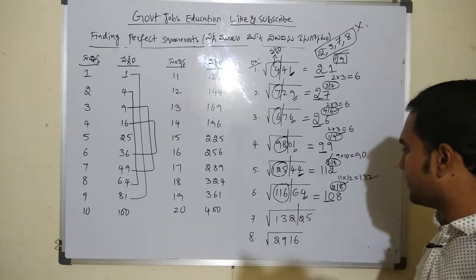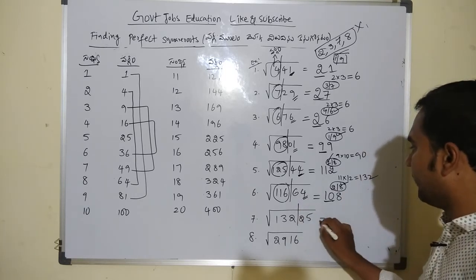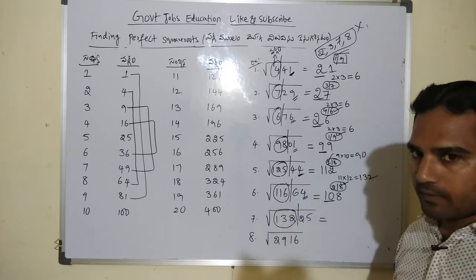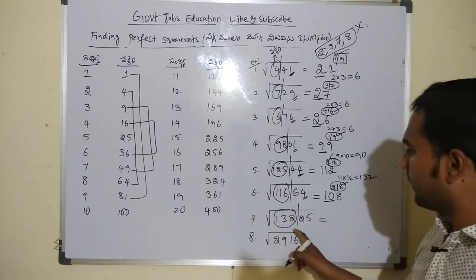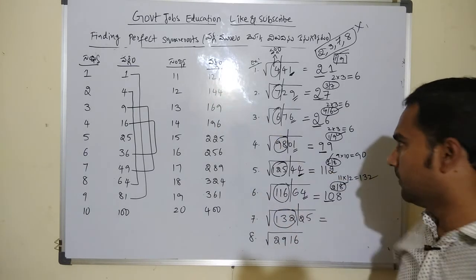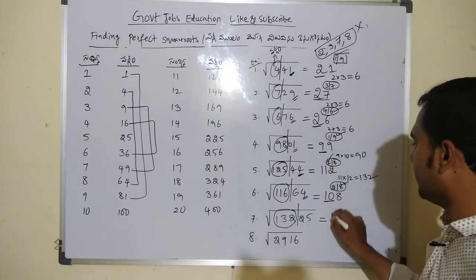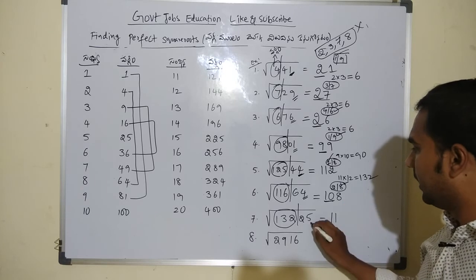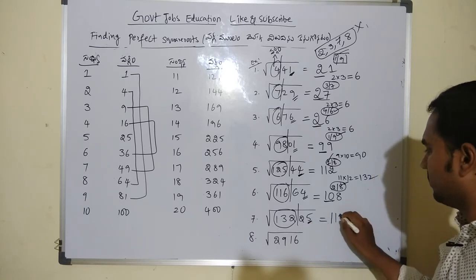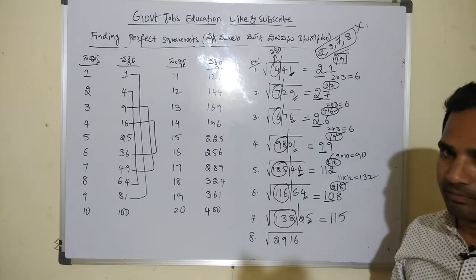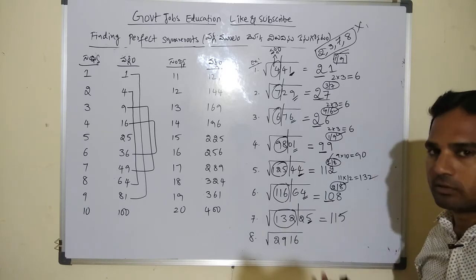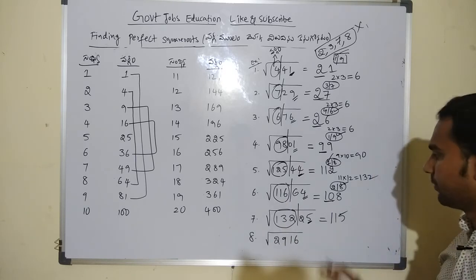Problem: 13225. Left side is 132. The nearest perfect square is 121, so 11 is the root digit. Unit value is 5 — 5 is a direct square ending, so unit digit of root is 5. The answer is 115.